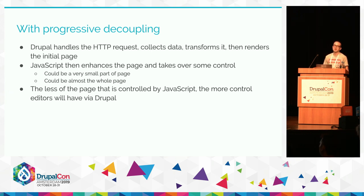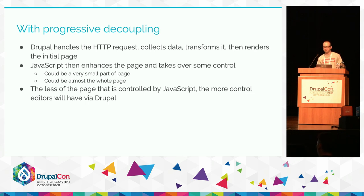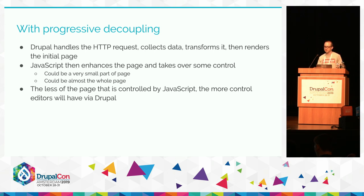With progressive decoupling, Drupal handles the routing, collecting data from the database or other sources, transforming it through text filters, making a render tree, allowing modules, contrib, custom ones, and themes to transform that render tree, and then finally dumping it all on the page as HTML. The difference with progressive decoupling is that we then layer on top a bit of extra JavaScript. This could target just a small part of the page, like a block with a live weather widget, or a larger part like a real-time block for a sports or political event.